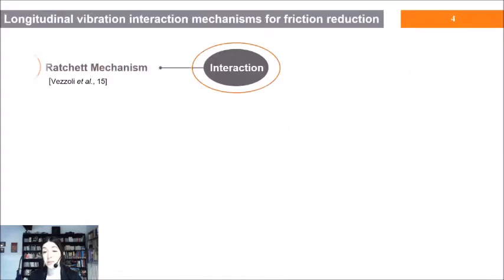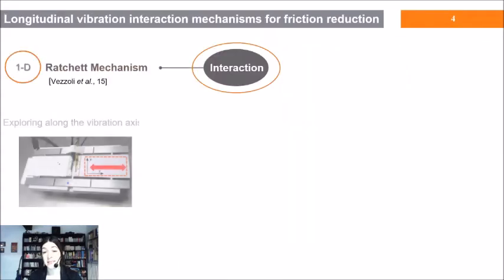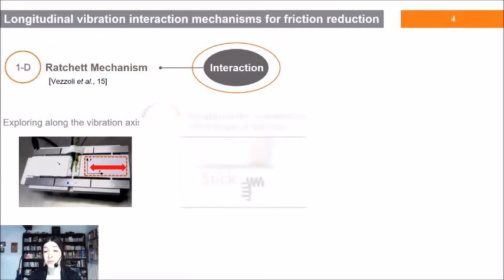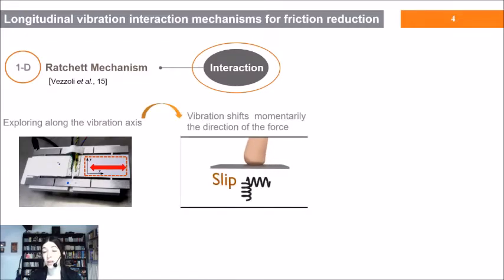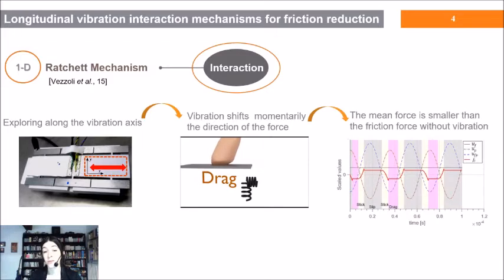The collinear model is called the ratchet mechanism. It states that in one dimension the vibration shifts the direction of the force, thus reducing the total lateral forces on average.